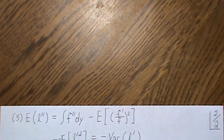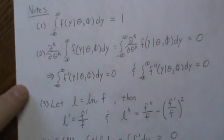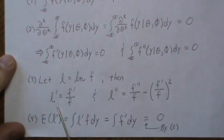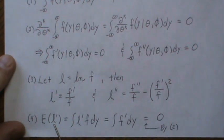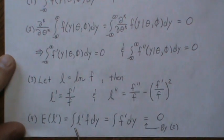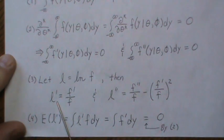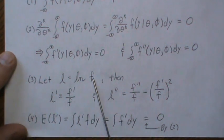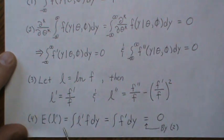For property four: if we take the expected value of the first derivative of the log-likelihood, we integrate L' times the density F over all y. But L' = F'/F, so the F's cancel, leaving the integral of F' dy, which by our earlier result is zero. Therefore the expected value of the score — the first derivative of the log-likelihood — is zero.